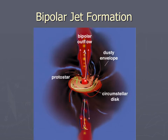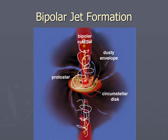That magnetic field then directs other infalling material, so as stuff spirals in it spirals out along the magnetic field. Only some material actually reaches the protostar; the rest spirals out along the magnetic field lines. So the accretion process produces two jets flowing out in both directions — what we call bipolar jets. It turns out any kind of accretion, not just with protostars but even with black holes, produces these jets.